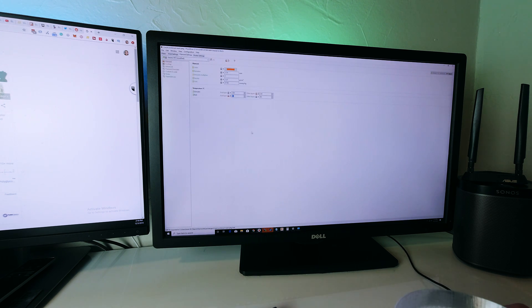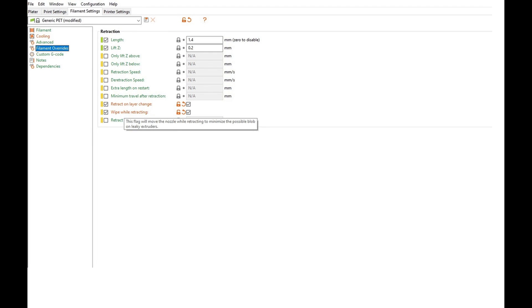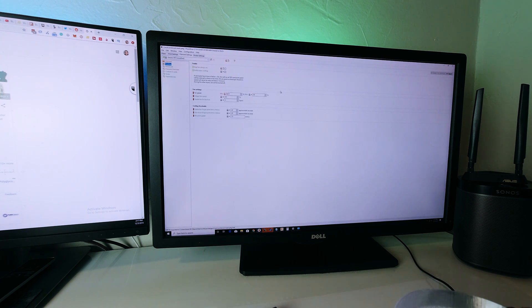Under filament settings, for the first layer I'm doing 230 degrees Celsius and for the bed I'm doing 95. PETG likes to stick to the bed, so if you have a hotter bed it's going to stick even better. For that adhesion I bump it up to 95, and then for all the other layers I drop it down to 90 and I raise the extrusion temperature to 235. So far that seems to work really well.